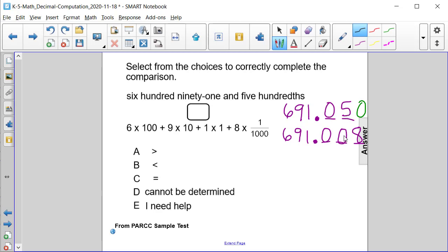But when we look at the hundredths, we have 5 hundredths in our first number, and we have 0 in our second number. So therefore, 5 is the bigger number with 5 hundredths. So it is greater than the second one, which is answer choice A.